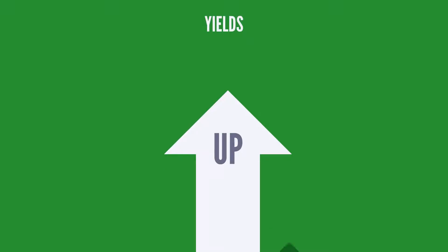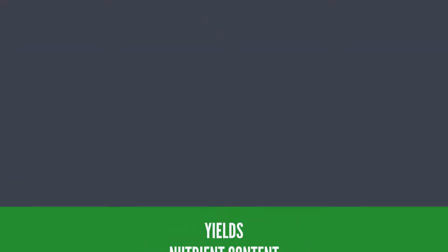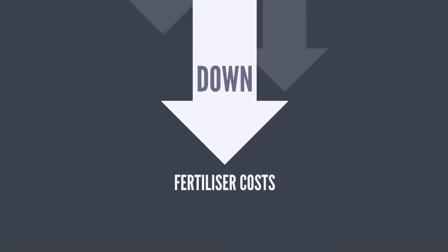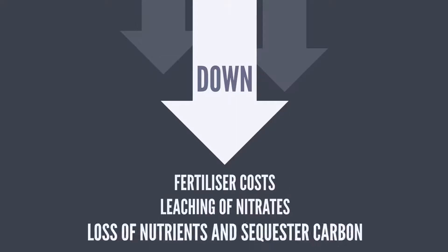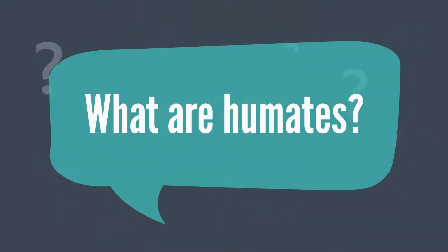What other product out there has the ability to increase yields, increase nutrient content, increase fertilizer effectiveness, reduce fertilizer costs, reduce leaching of nitrates, reduce the loss of nutrients and sequester carbon? So what are humates?